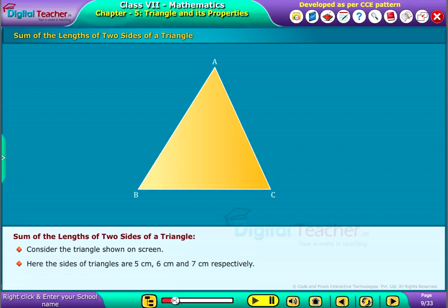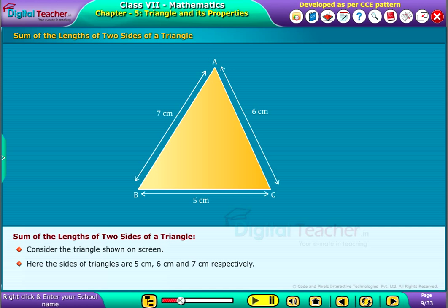Here, the sides of the triangle are 5 cm, 6 cm, and 7 cm respectively. If we add any two sides of the triangle, obviously it will be greater than the third side.